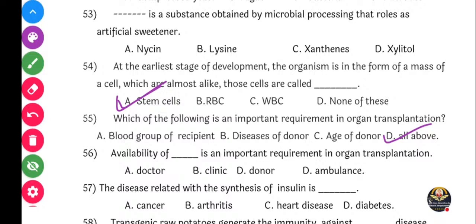Next question: Availability of dash is an important requirement in organ transplantation. Options: Doctor, clinic, donor, or ambulance. Yes, donor - doctor asil, clinic asil, ambulance asil, panza donor asil dar organ ko donate karnaar. Right answer is the donor.